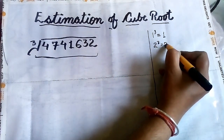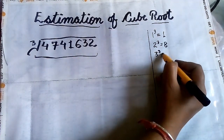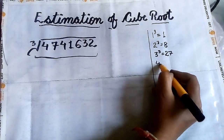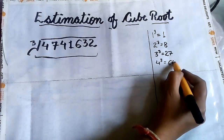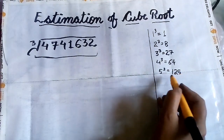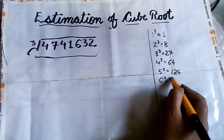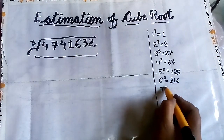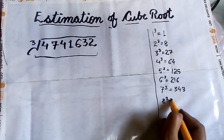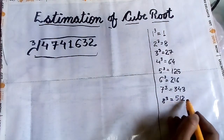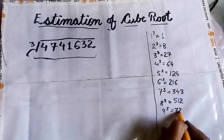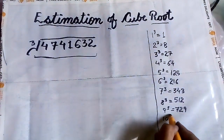Before going to the method, you must know the cubes of numbers from 1 to 10. 1³ = 1, 2³ = 8, 3³ = 27, 4³ = 64, 5³ = 125, 6³ = 216, 7³ = 343, 8³ = 512, 9³ = 729, and 10³ = 1000.